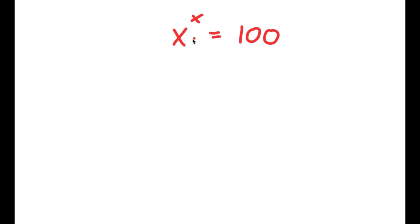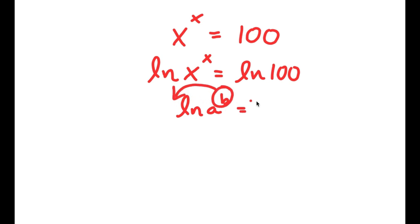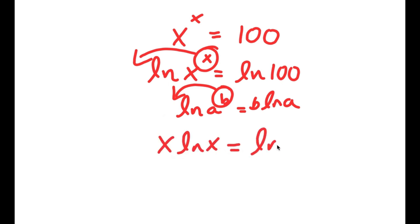In this problem I have x to the power of x is equal to 100. I'm going to start by taking the natural log on both sides, giving ln of x to the power of x is equal to ln 100. Using the property ln of a to the power of b equals b times ln a, I can move x to the front and get x times ln x is equal to ln 100.